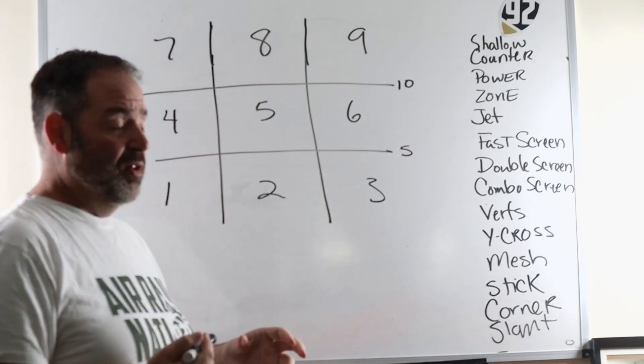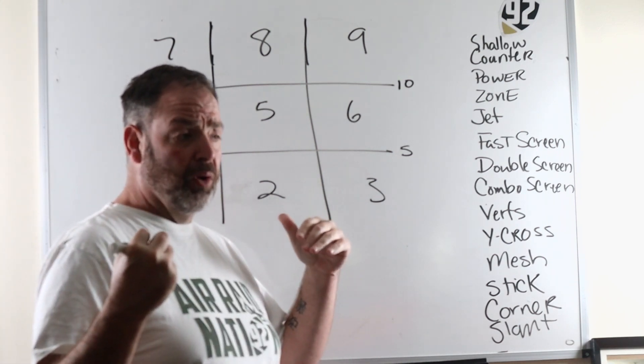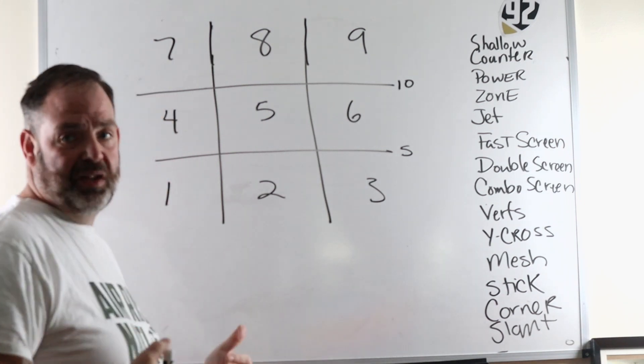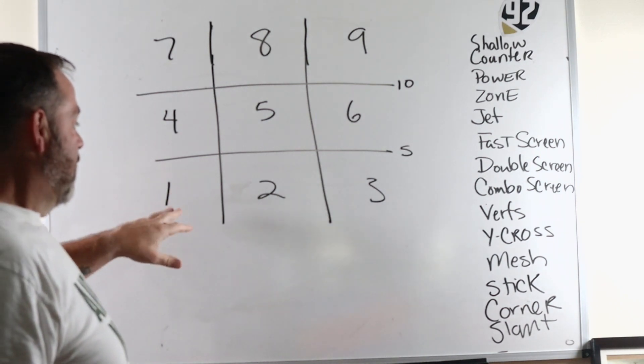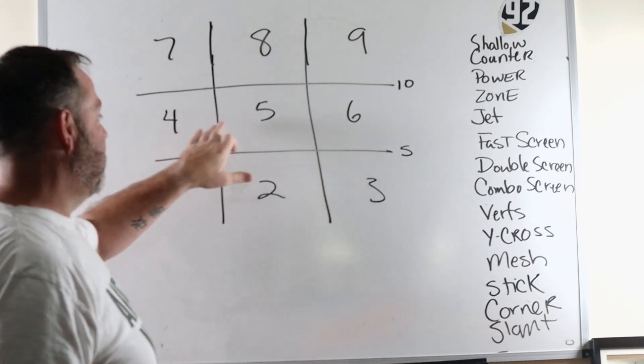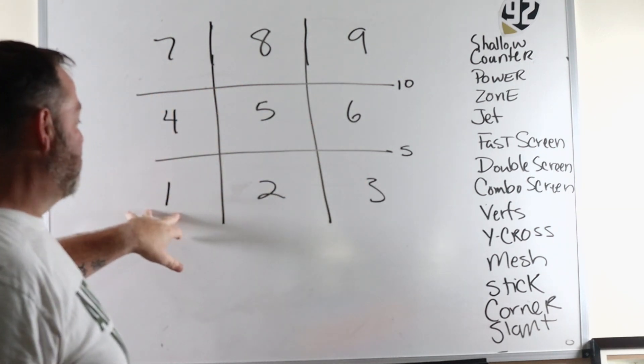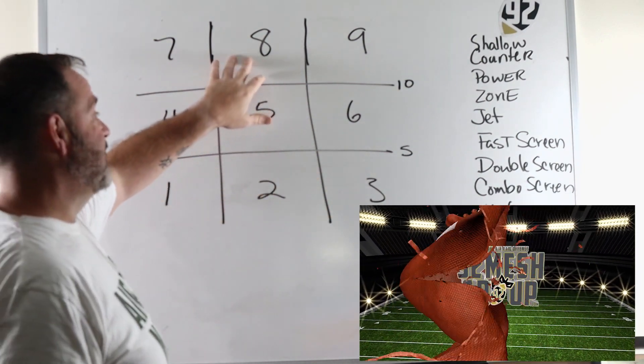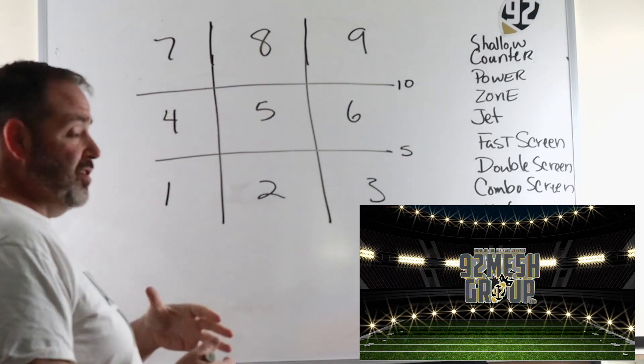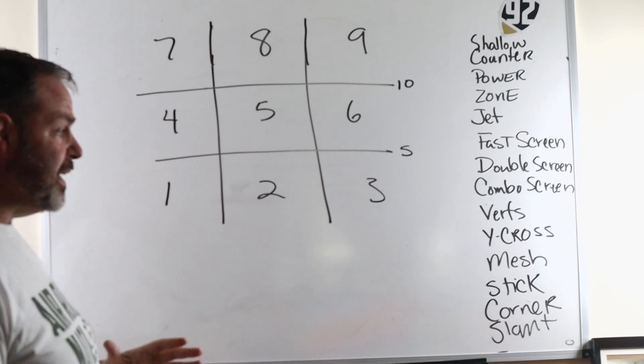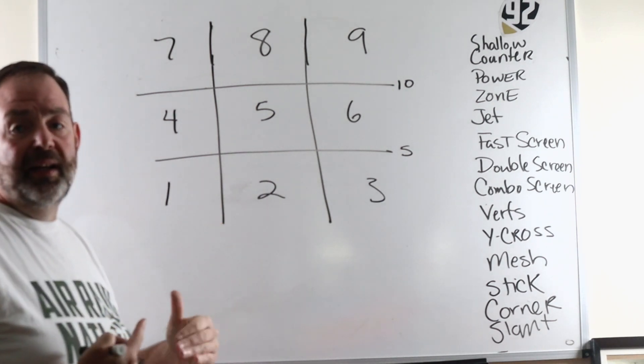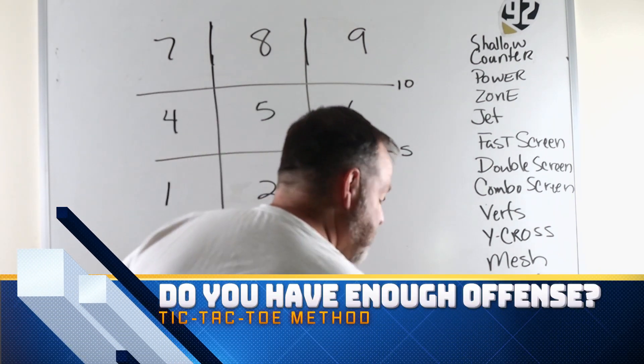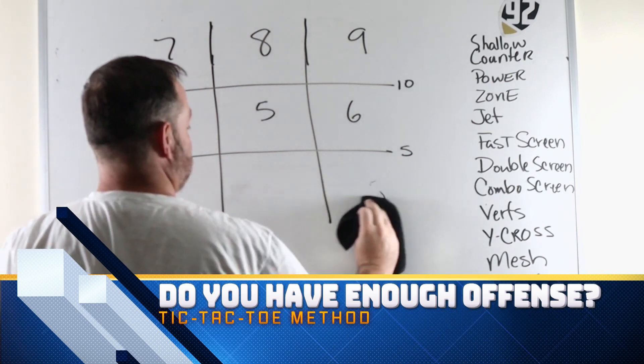So I started thinking about tic-tac-toe. Those of you guys who are old school labelers of Huddle, or you're using Huddle Assist but you used to have to do that, a lot of defensive guys would always plot where plays would hit in the quadrant, whether it be flat left being one, flat right being three, five to ten yards down the middle being five, more than ten down the middle being eight, so on and so forth. And I started looking at this tic-tac-toe board and I said to myself, this is an ingenious way to really know if you have enough offense or if you need more.